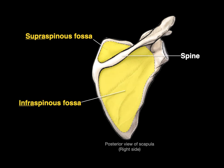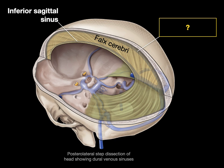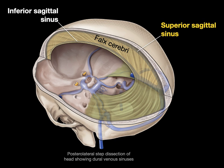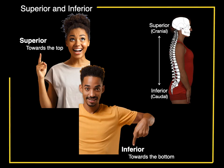So the prefix supra is used for superior, or infra for inferior. Here's a posterior lateral step dissection of the head that shows our dural venous sinuses. This is called the falx cerebri. Anatomists called this one on the bottom the inferior sagittal sinus. They call the one on top the superior sagittal sinus because it's on top. And those are the terms superior and inferior in a nutshell.